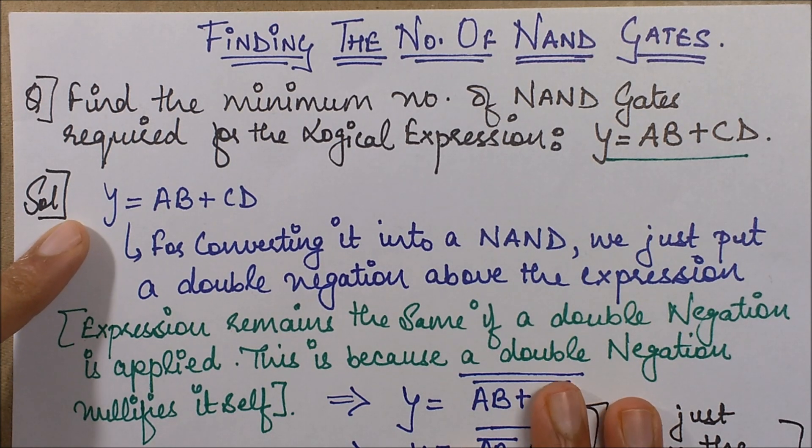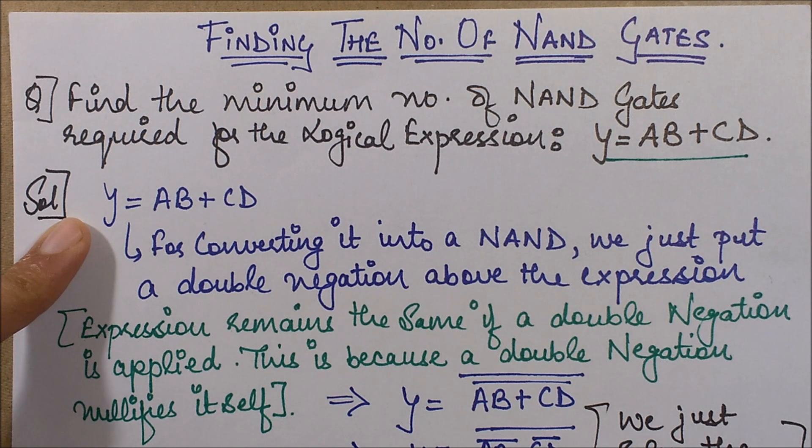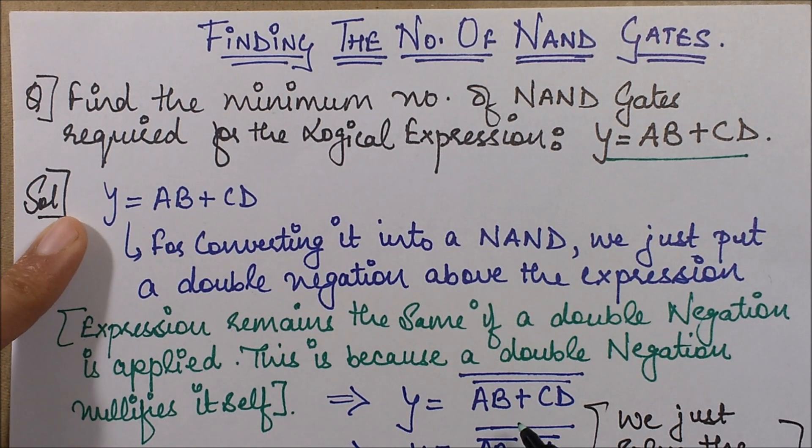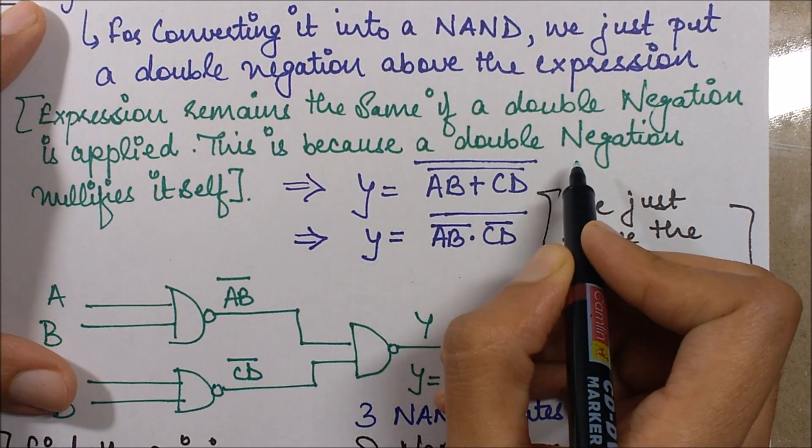Now for converting it, for formulating or converting it into a form which can be then constructed as a NAND circuit, as a circuit formed by NAND gates, what we do is we just apply a double negation to our expression. So by applying a double negation, this is the expression that I have and I apply a double negation over here.